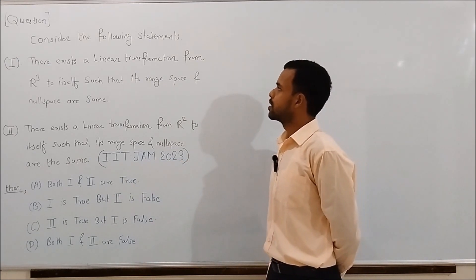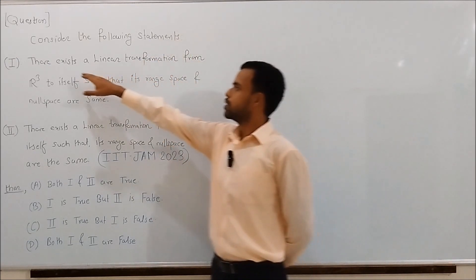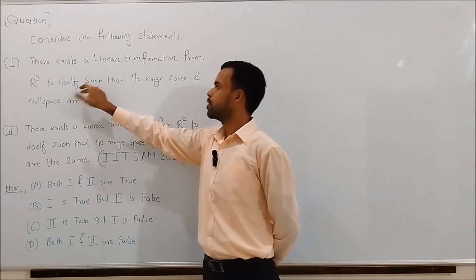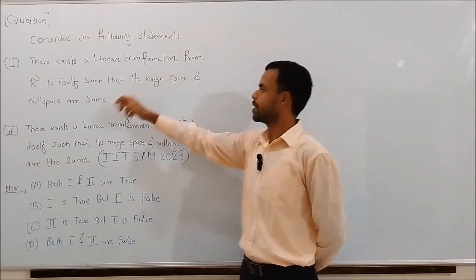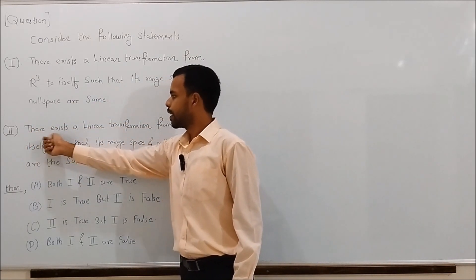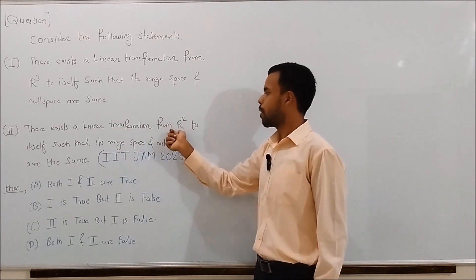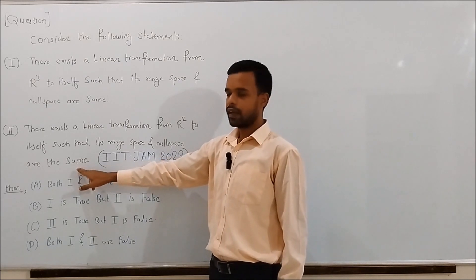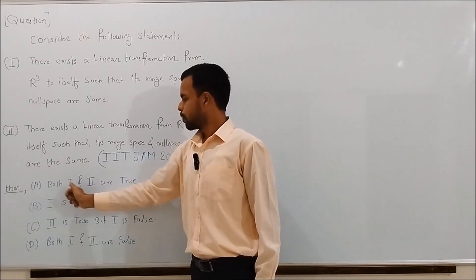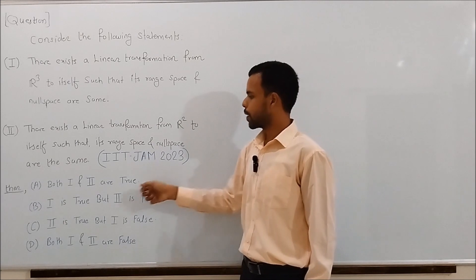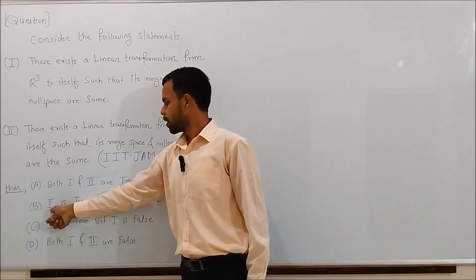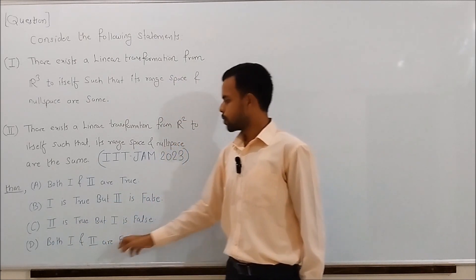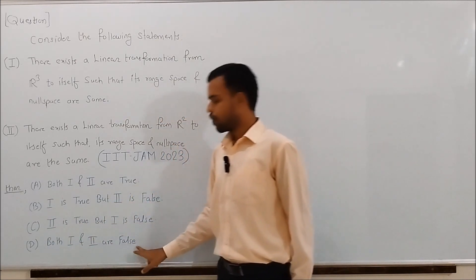The question belongs to the Linear Algebra topic. Consider the following statements. Statement 1: there exists a linear transformation from R3 to itself such that its range space and null space are the same. Statement 2: there exists a linear transformation from R2 to itself such that its range space and null space are the same. Options are: both 1 and 2 are true; 1 is true but 2 is false; 2 is true but 1 is false; or both 1 and 2 are false.